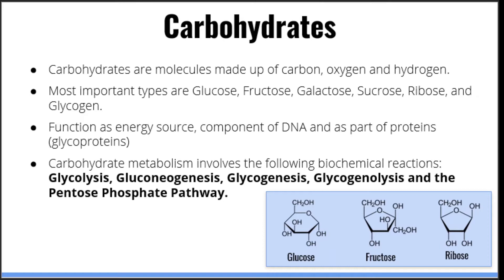Sucrose, on the other hand, is a disaccharide, which means it is a small polymer made up of a glucose and a fructose monomer. It is also found in plants. Ribose is found in nucleic acids such as RNA and DNA. It also is a carbohydrate monomer, however it's a little bit different than the other typical carbohydrate monomers. We will talk more about these in later videos. Glycogen, on the other hand, is the storage form of glucose. It is made up by combining a lot of glucose monomers to form a long chain, and is produced by the human body in tissues such as the liver and skeletal muscle.